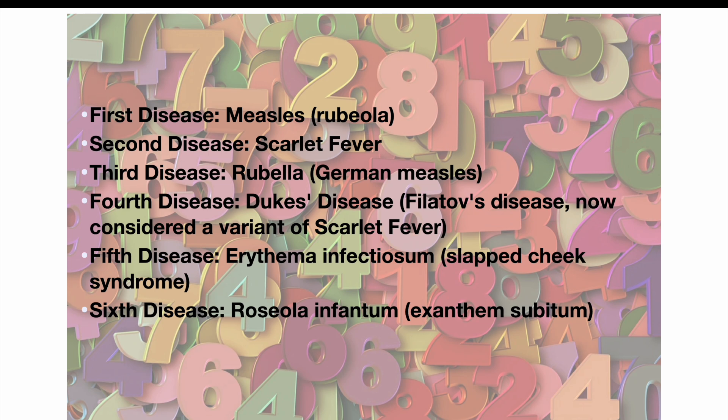The fourth disease is now understood to be a variant of scarlet fever, which was already listed as the second disease. Except for the fifth disease, these numerical namings are no longer used. I wouldn't worry about memorizing these alternative names with the numbers, but just be aware that you might still come across them, especially with the fifth disease, which is still in use, and for the others in older textbooks and maybe in some medical trivia pub quizzes.